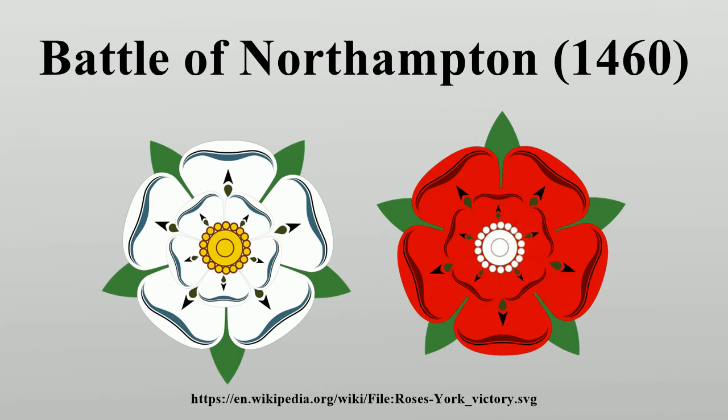At Calais, Warwick found his uncle Lord Faulkenberg. In England, the Lancastrians were quick to exploit the Yorkist flight. The Earl of Wiltshire was appointed lieutenant of Ireland and the Duke of Somerset became captain of Calais. Neither, however, succeeded in occupying their new posts, as the Irish refused to dislodge York and the gates of Calais remained firmly closed to their new captain.